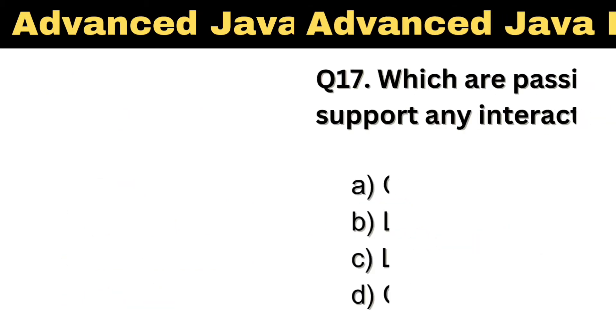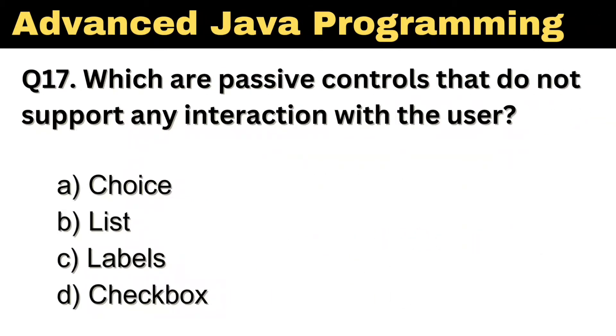Question number 17: Which are passive controls that do not support any interaction with the user? The right answer is Option C: Labels.